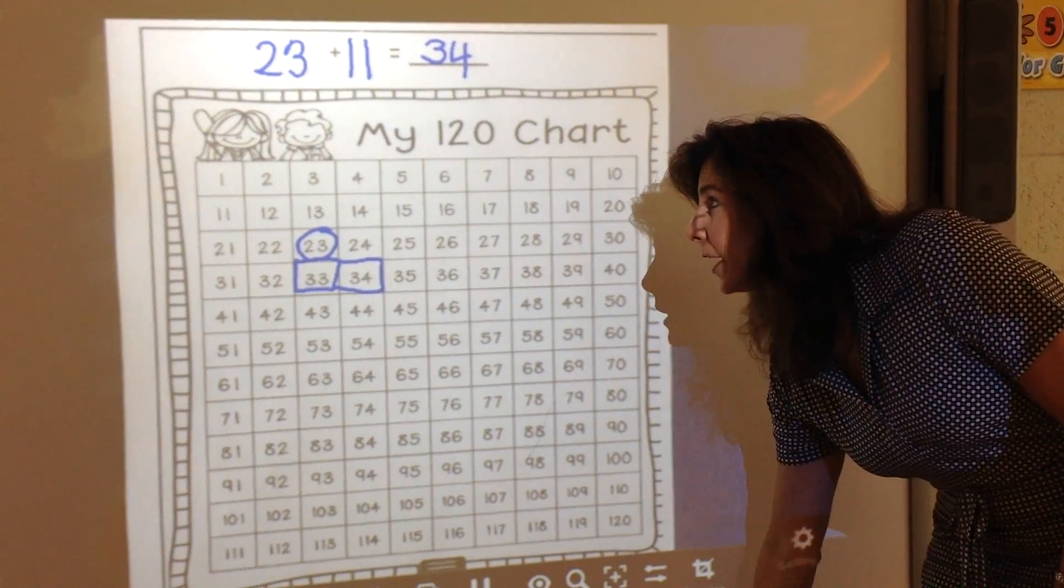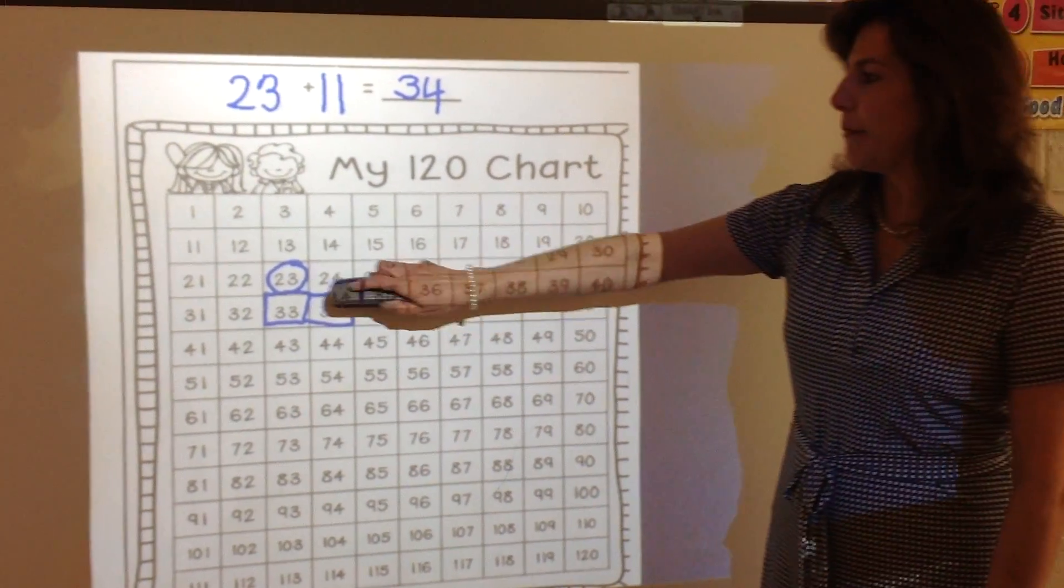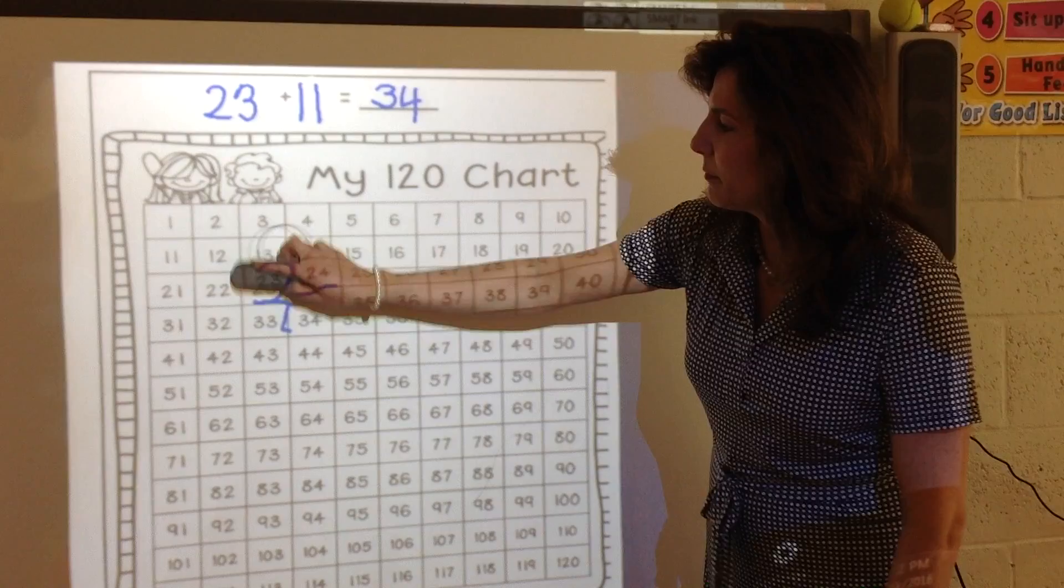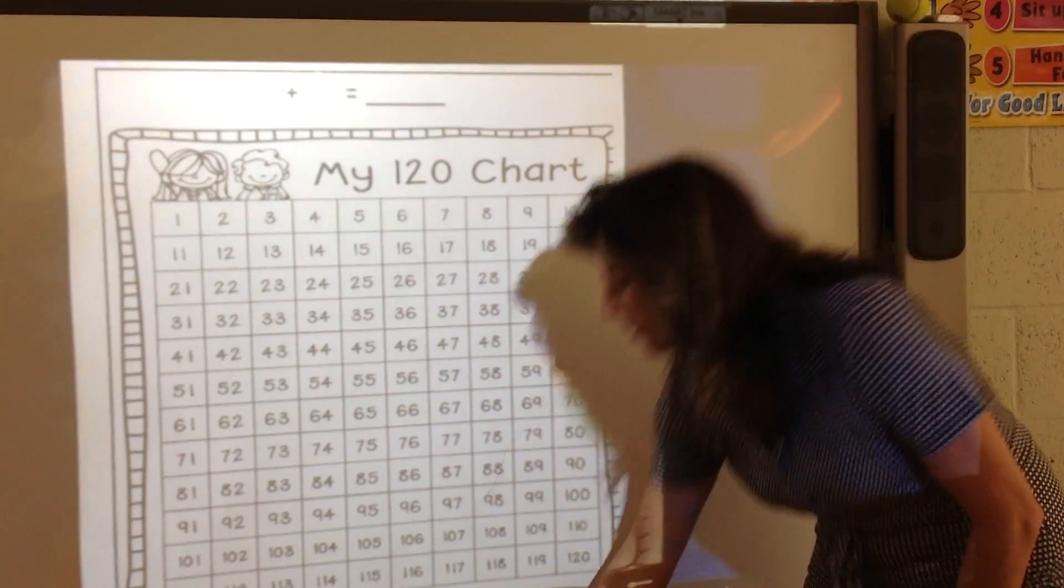That's an easy way for children to see what they're doing when adding 11, which is 1 ten and 1 one. Now we can add two higher addends.